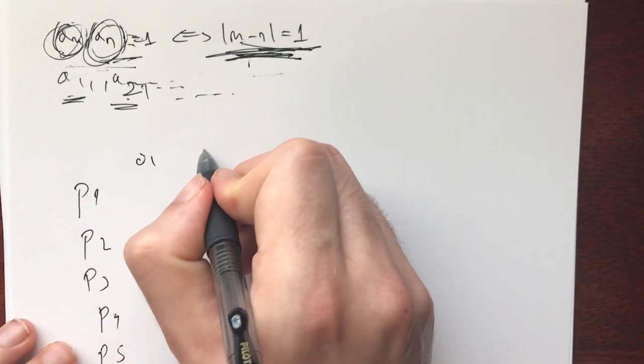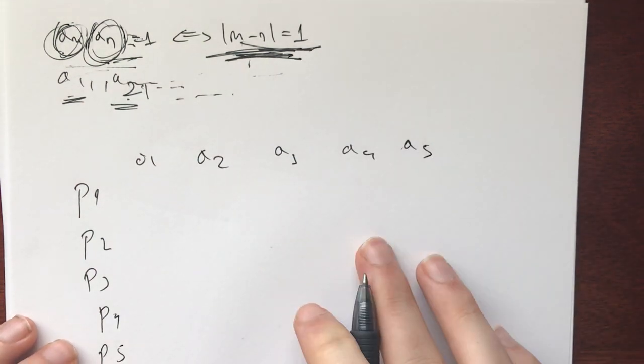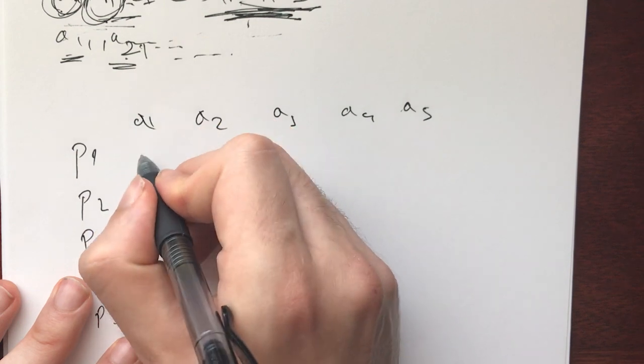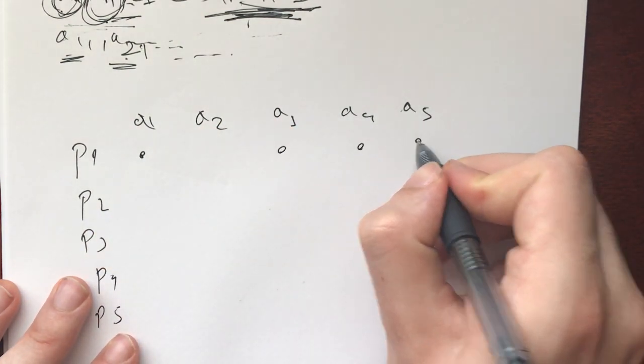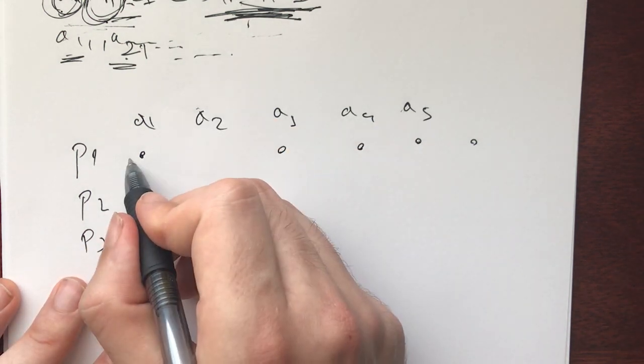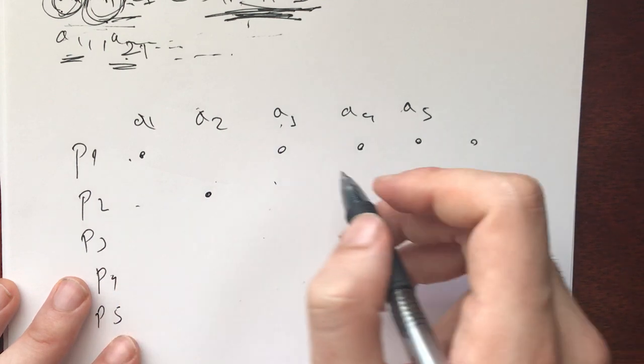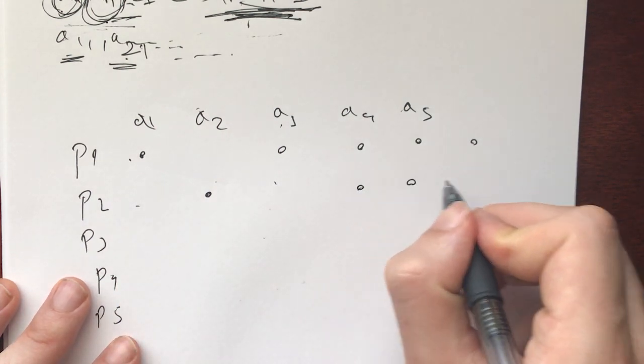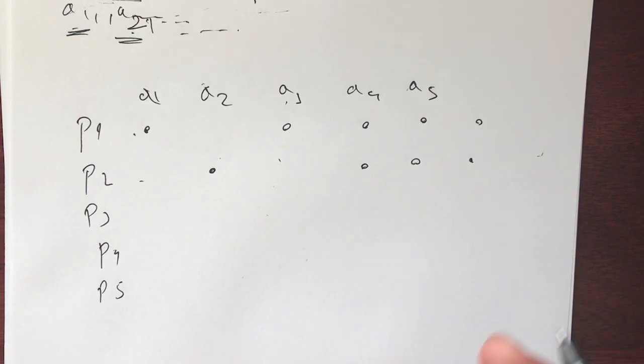So now we have a1, a2, a3, a4, a5, and so on. Let's say a1, we give it p1. Then we need to give every other number p1, okay? Now a2 cannot have p1, so it needs to have p2. a3 can't have it. And then a4, a5, and every other number needs to have p2. So far so good.